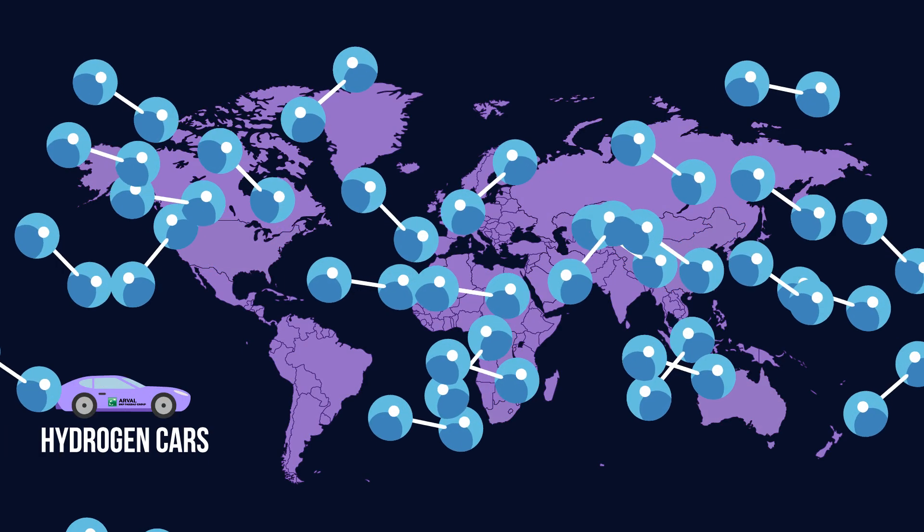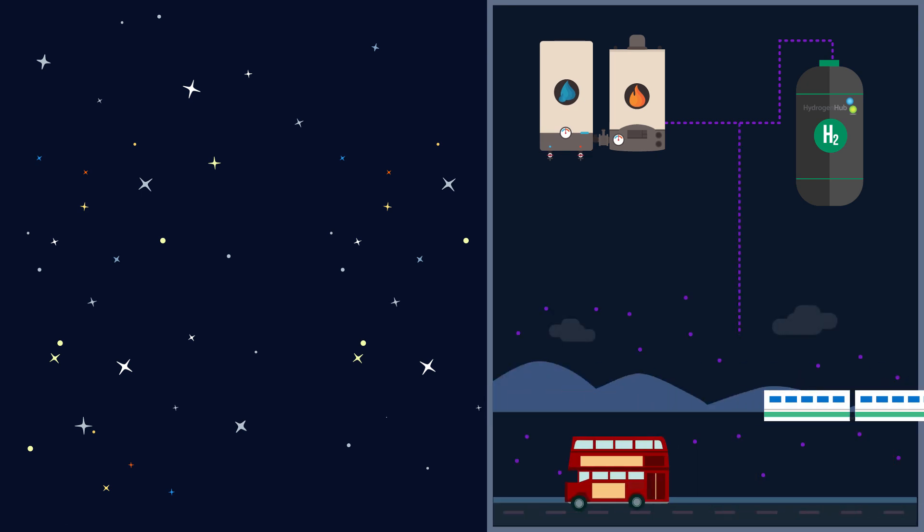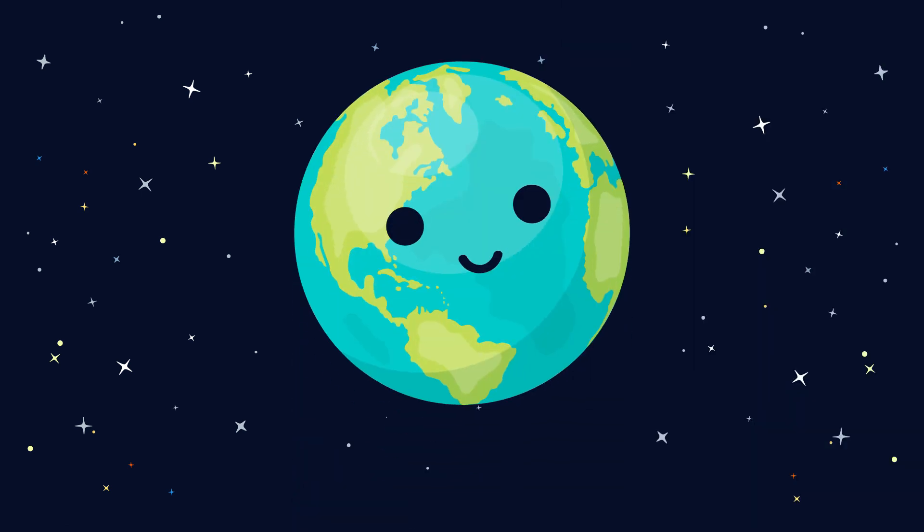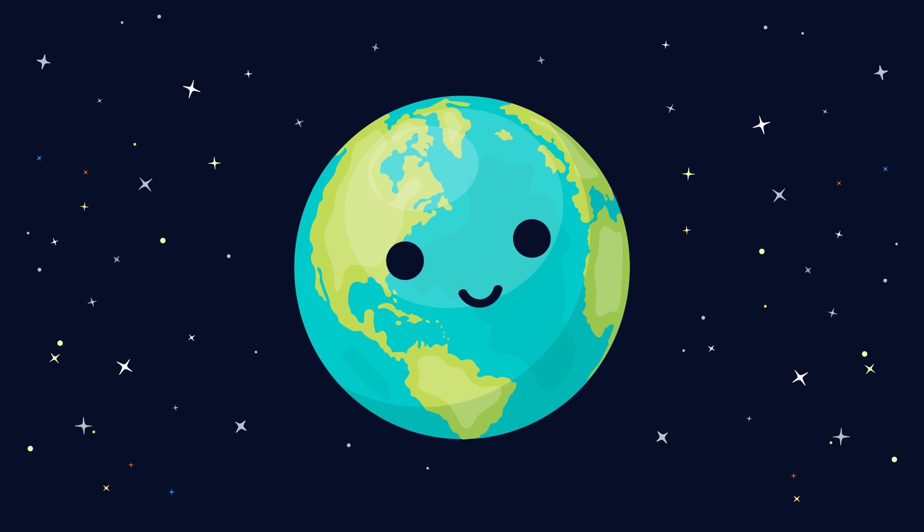Fuel cells have other uses too. They have a history of providing electricity in rockets and have the bonus of producing water for the astronauts. They have also been developed for uses in homes to produce heat and power, in buses and in trains, and in the future could potentially have many more technical applications to help our fight against climate change.